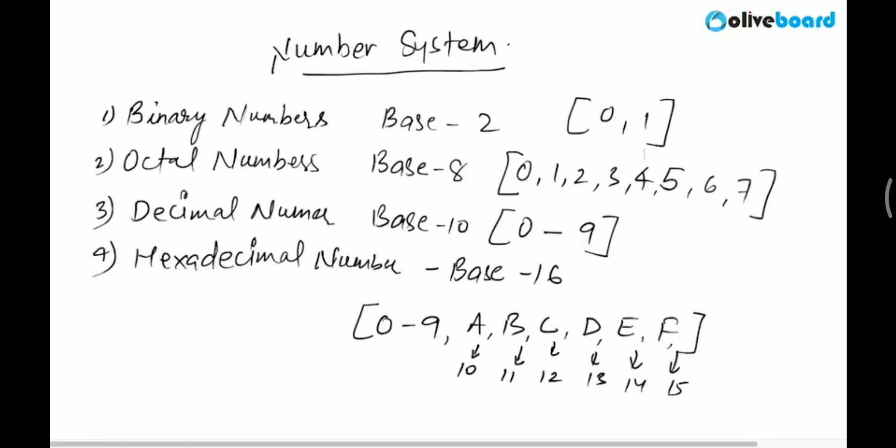The important point we are going to discuss is the conversion of these numbers — conversion from binary to decimal or decimal to binary, conversion from octal to decimal or decimal to octal, and decimal to hexadecimal or hexadecimal to decimal. We will start first with binary and decimal conversion.